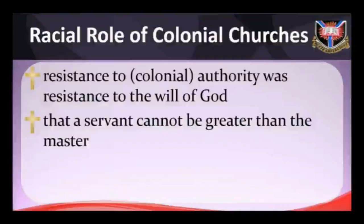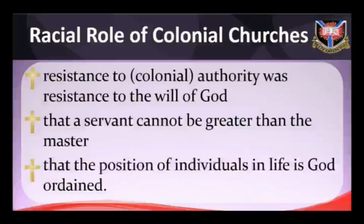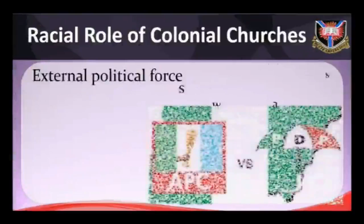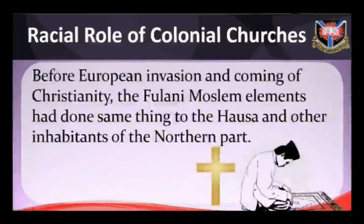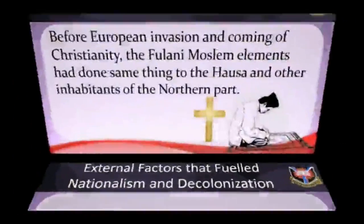The church was an arm of the colonial system aimed at softening people's minds and resistance to colonial rule. People were told political lies in religious institutions — for example, that resistance to colonial authority was resistance to the will of God; that the servant cannot be greater than the master; that one's position in life is God-ordained. The idea of using religion to bring people into surrendering to external political forces was not new — before European invasion and the coming of Christianity, Fulani Muslim elements had done the same to the Hausa and other inhabitants of Northern Nigeria.